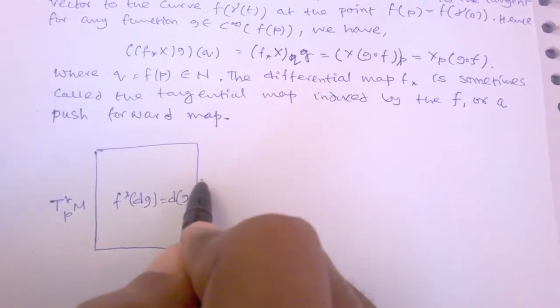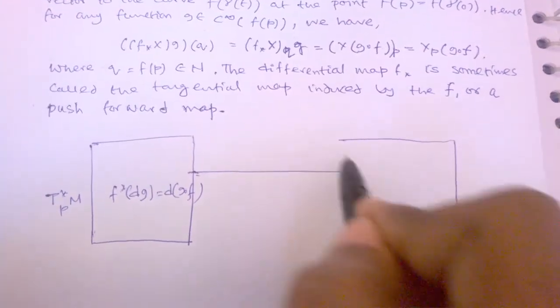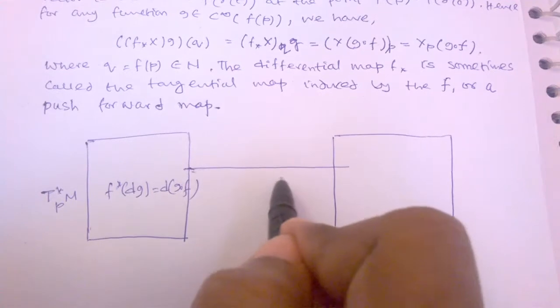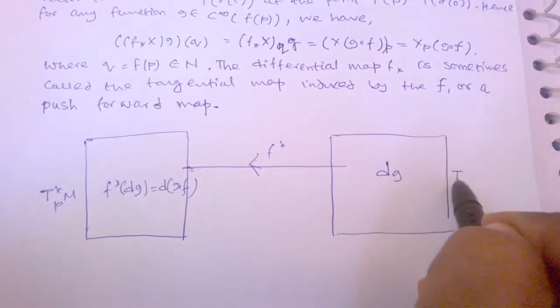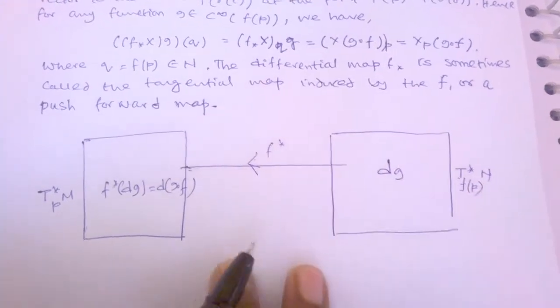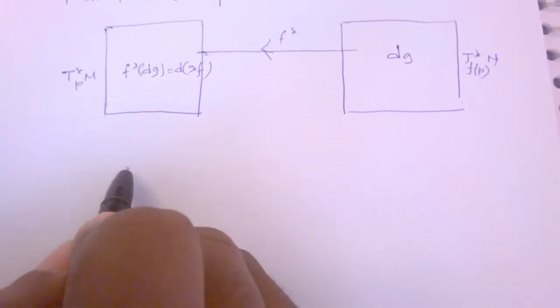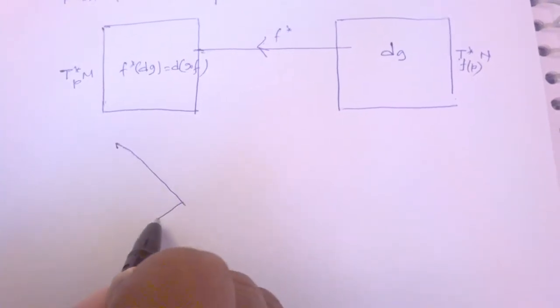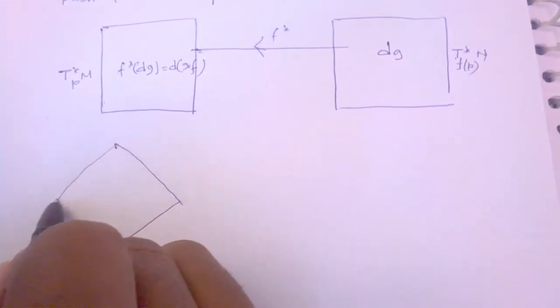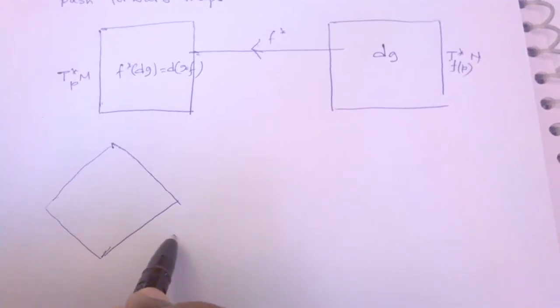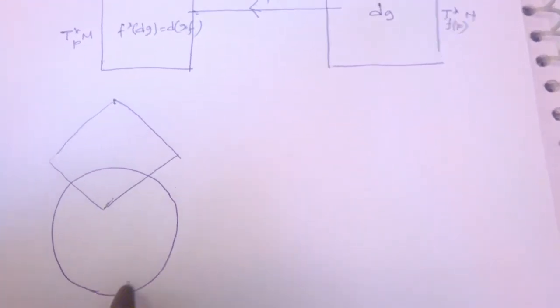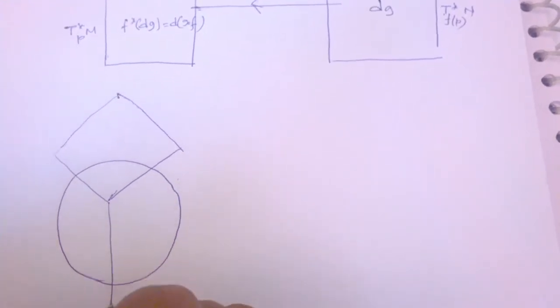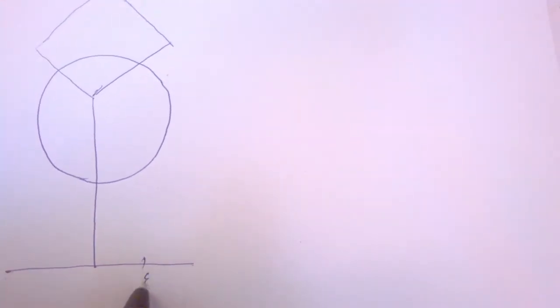We now consider the composition g ∘ F. The composition g ∘ F at point P can be expressed and illustrated with a picture. Let us draw a picture to represent g ∘ F of P.